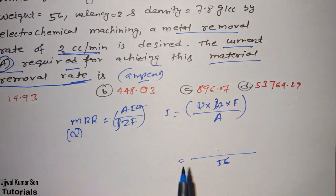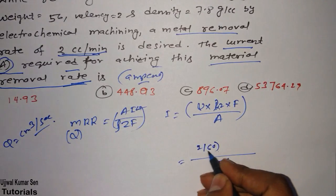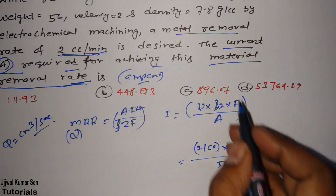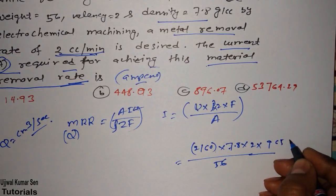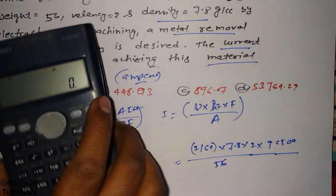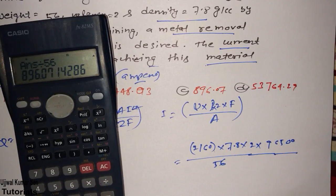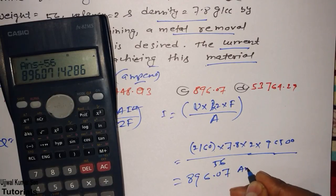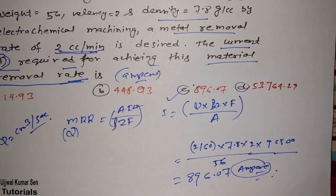Note that Q is in centimeters cubed per second, but the given value is per minute, so we divide by 60: Q = 2/60. Density ρ is 7.8, valency Z is 2, and Faraday's constant F is 96,500 coulombs. Using the calculator: (2/60) × 7.8 × 2 × 96,500 divided by 56 gives approximately 9,607 amperes. Option C is the correct answer.